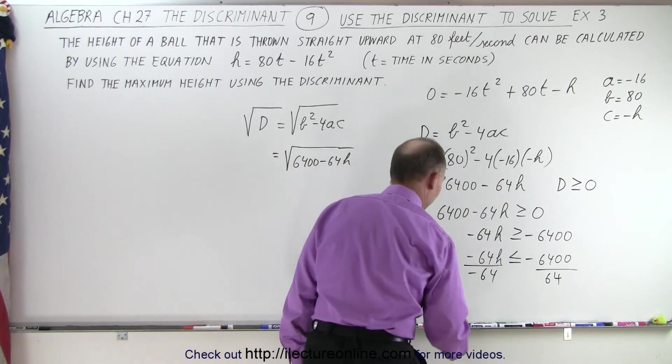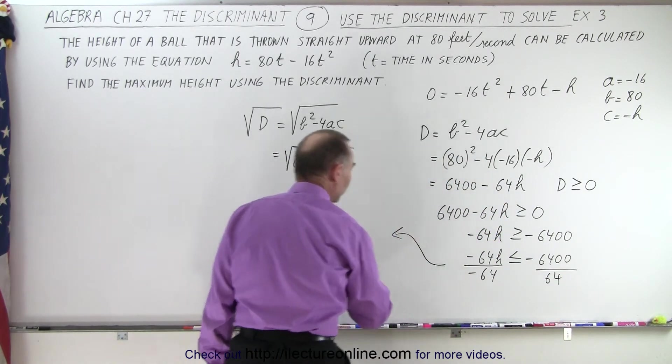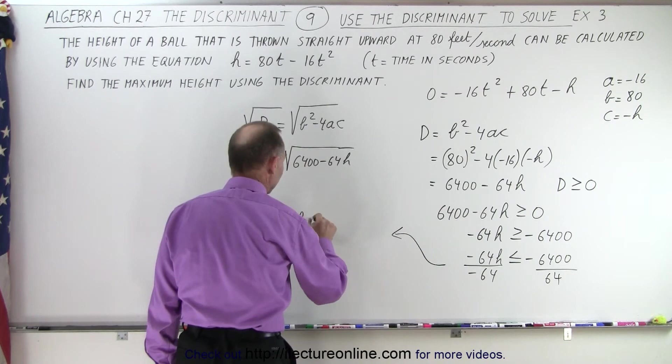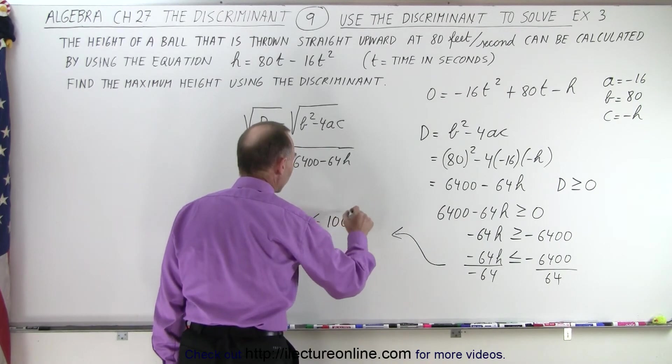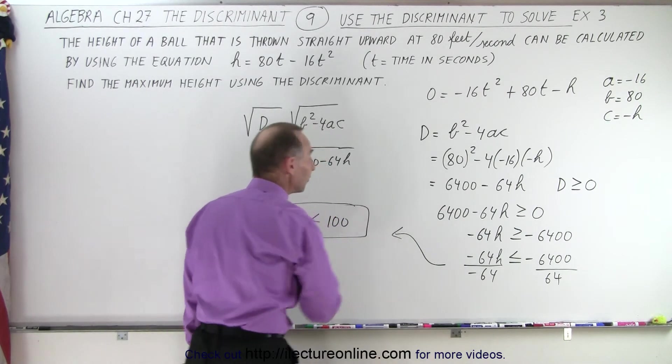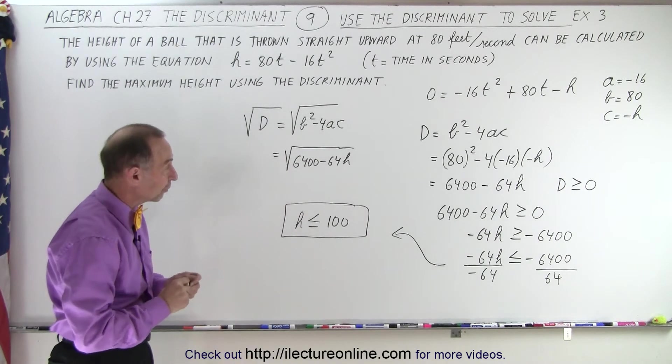This cancels out. So now we have h must be less than or equal to 100, and that comes out of the equation when we solve for the discriminant.